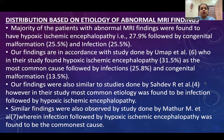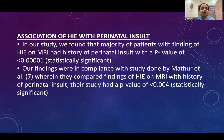Distribution based on etiology of abnormal MRI findings: majority of patients with abnormal MRI findings were of HIE at 27.9%, followed by congenital malformation and infection, in accordance with Umap et al., Sahadev R. et al., and Mathur M. et al. We also found that majority of patients with HIE on MRI had a history of perinatal insult, which was in compliance with the study done by Mathur M. et al.